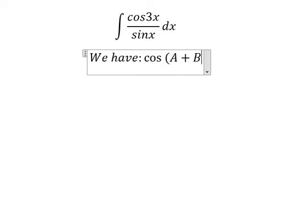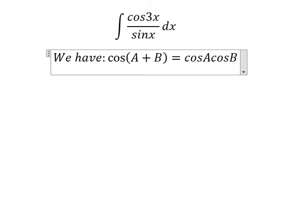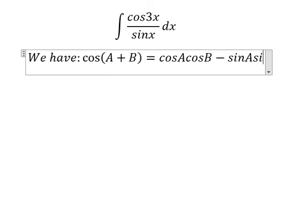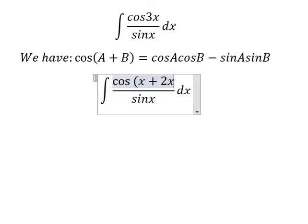We have cosine A plus B equals cosine A cosine B minus sine A sine B. So cos 3x I can put into x plus 2x.